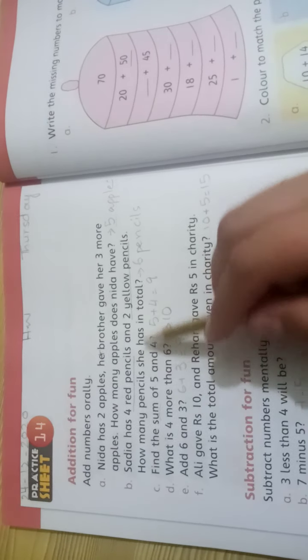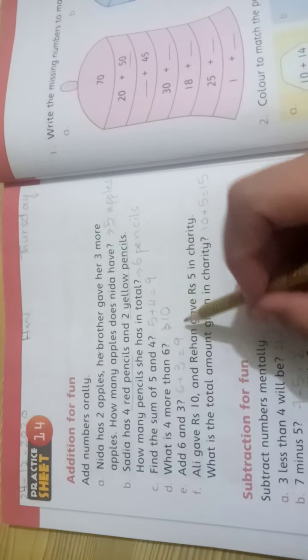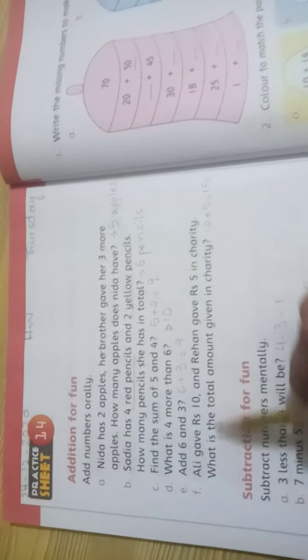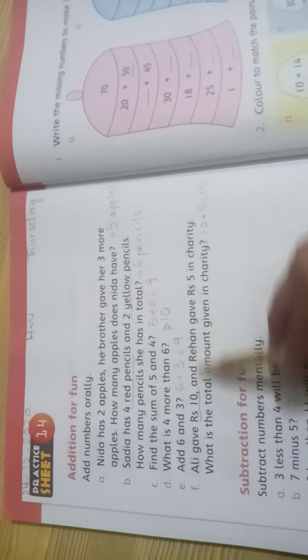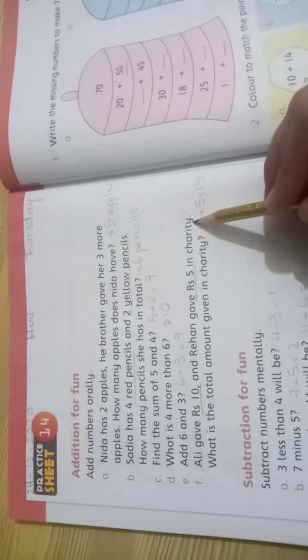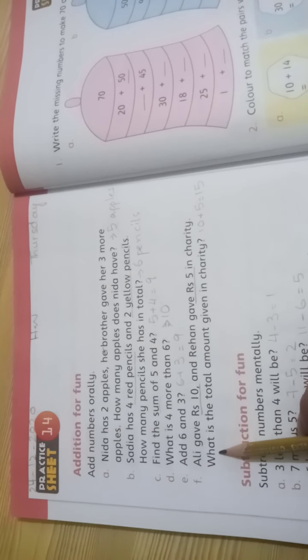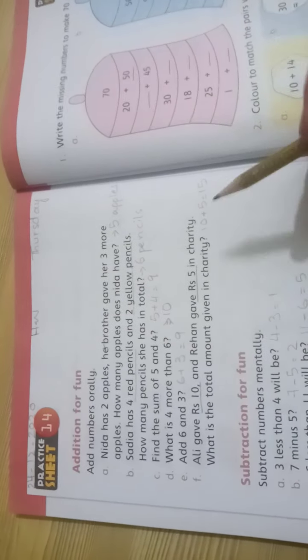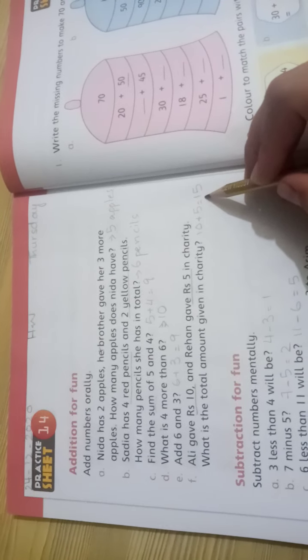Add 6 and 3: 6 plus 3 is 9. Ali gave 10 rupees and Rihan gave 5 rupees in charity. Ali gave 10 and Rihan gave 5 separately to charity. Total charity money? 10 plus 5 equals 15.